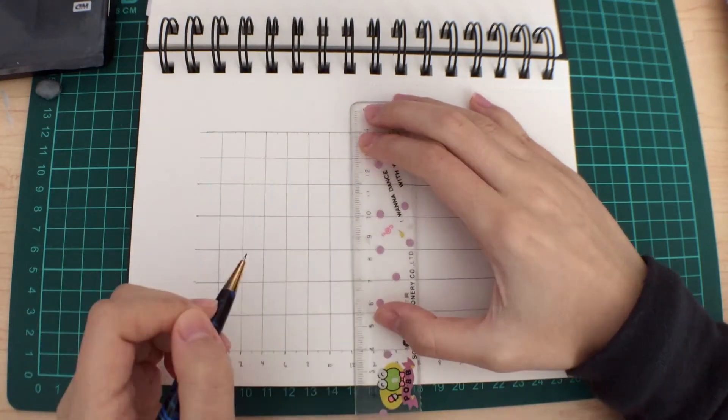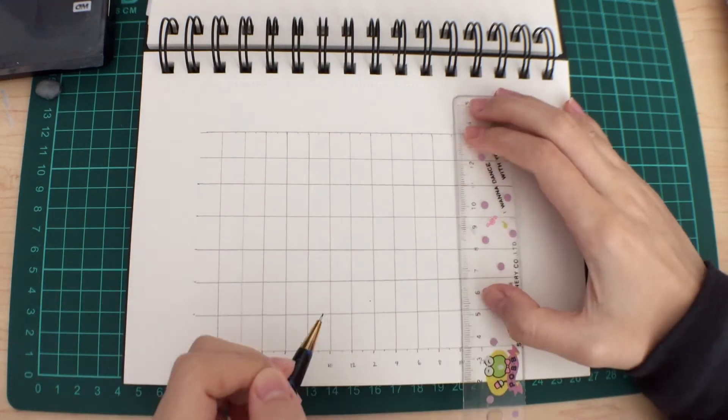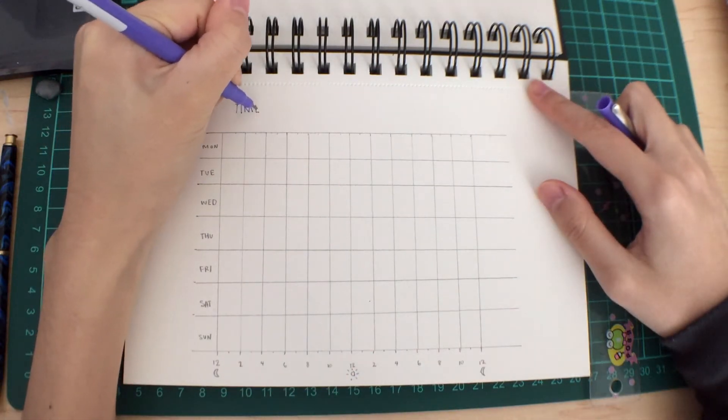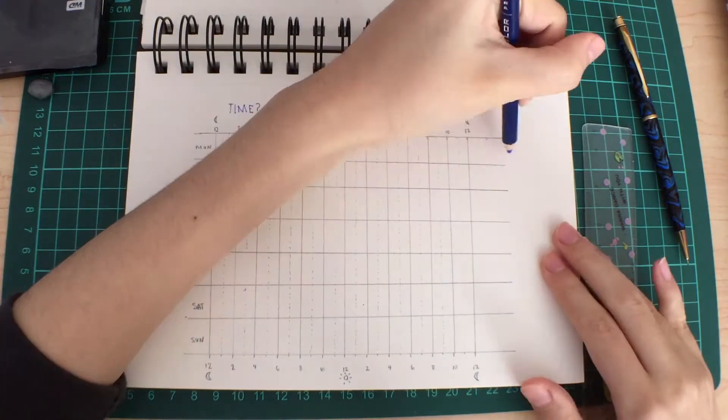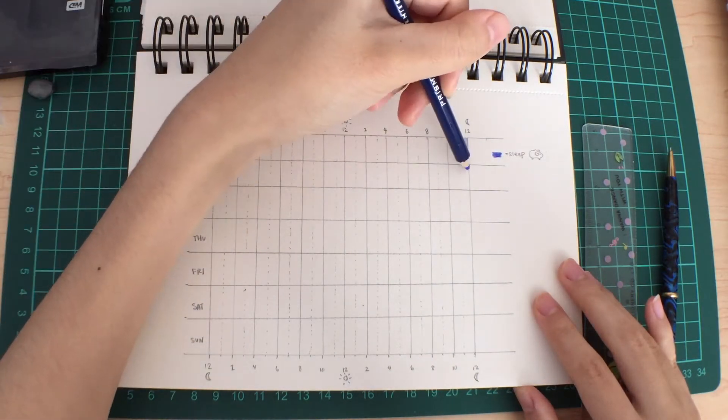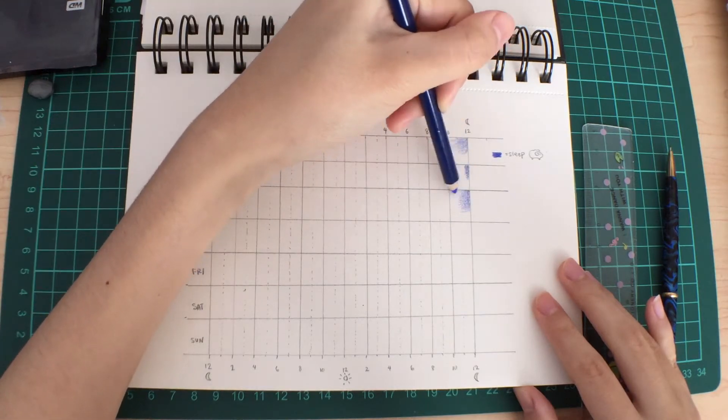The reason we're going with a week is because we live in this weird society where it functions on a seven-day cycle. How fun! So let's start with sleep, because that's by far the single largest proportion of any given day that is dedicated to one activity.